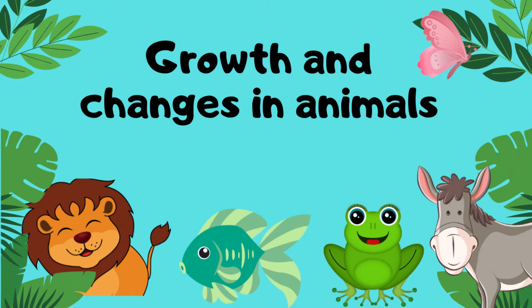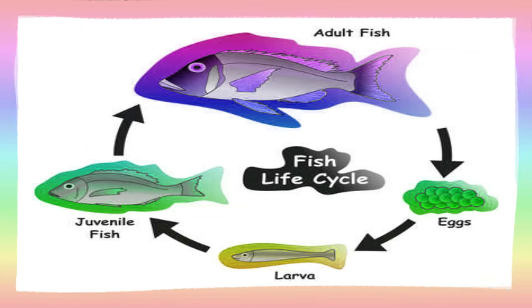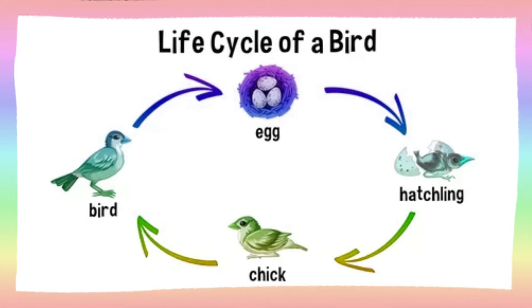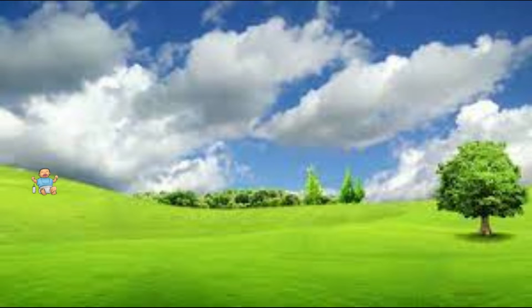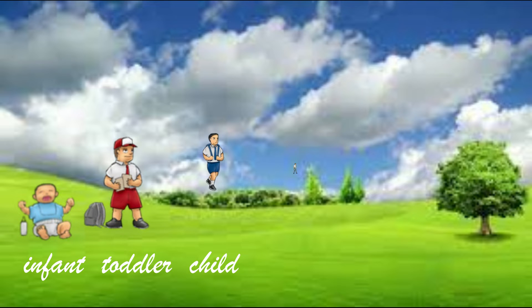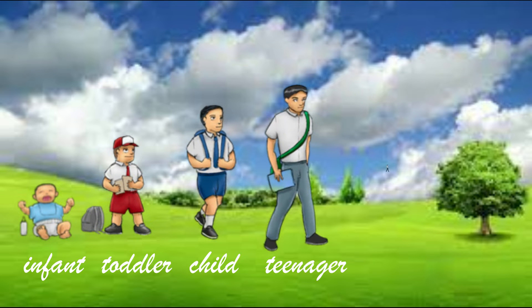Welcome everyone. In this video we are going to learn about growth and changes in animals. Animals have distinct life cycles — all animals and humans reproduce, grow, and change. The human life cycle consists of several stages: infant, the newly born baby, then toddler, childhood, teenager, adult, and old age.